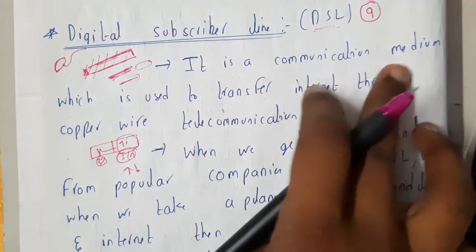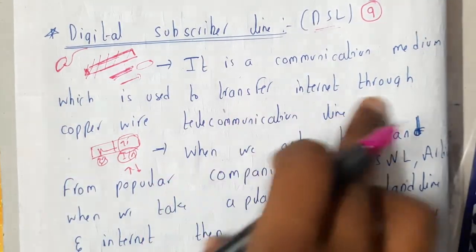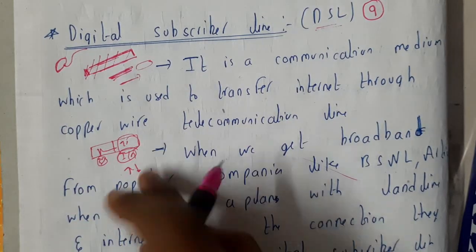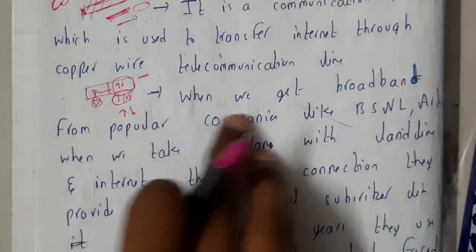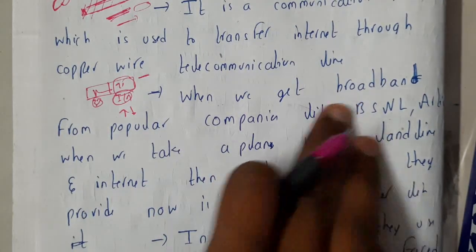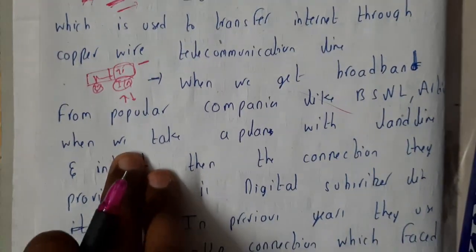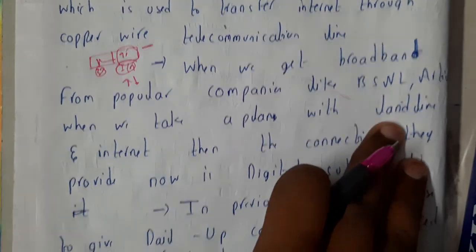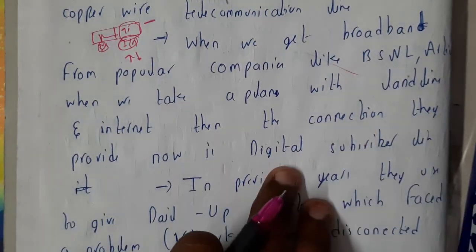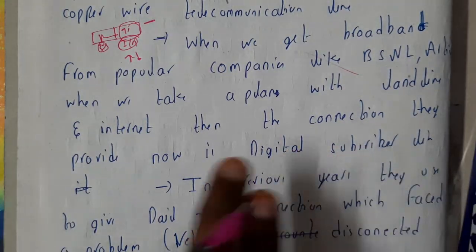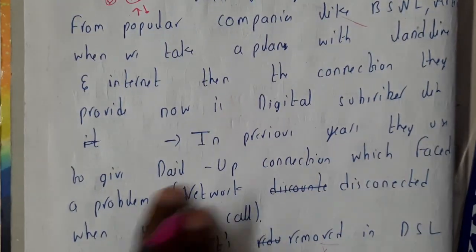DSL is a communication medium which is used to transfer internet through a copper wire — a copper wire for the telecommunication line. When we get broadband from popular companies like BSNL or Airtel, when we take a plan with the landline and internet, they give a connection which is called Digital Subscriber Line.